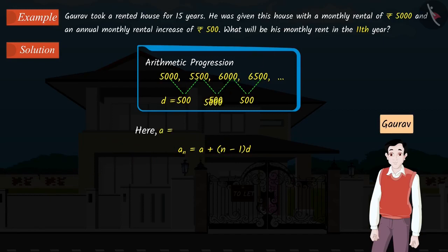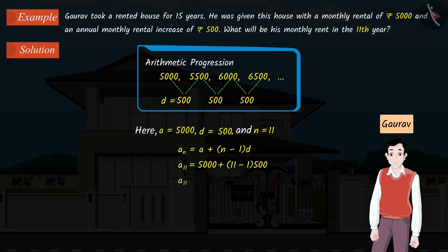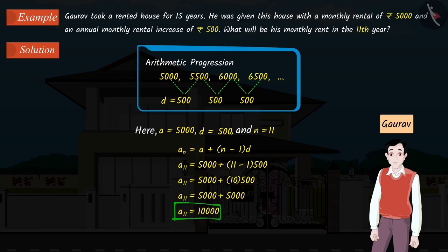Here, the first term A equals 5,000, the common difference D is 500, and n equals 11. Therefore, the 11th term of the AP comes out to be Rs. 10,000. So, the monthly rent for the 11th year will be Rs. 10,000.